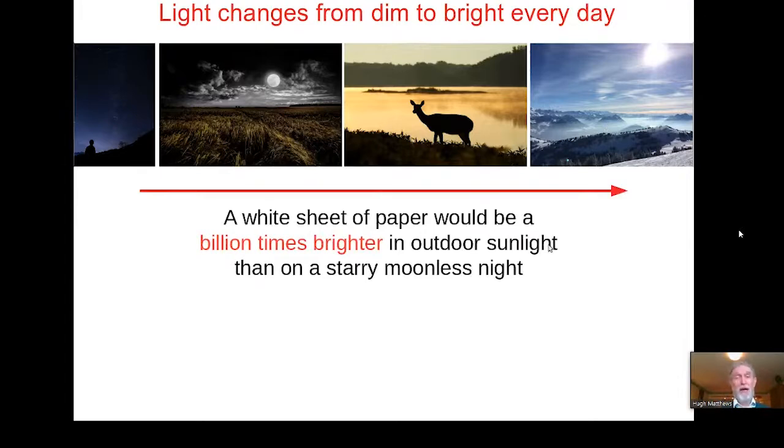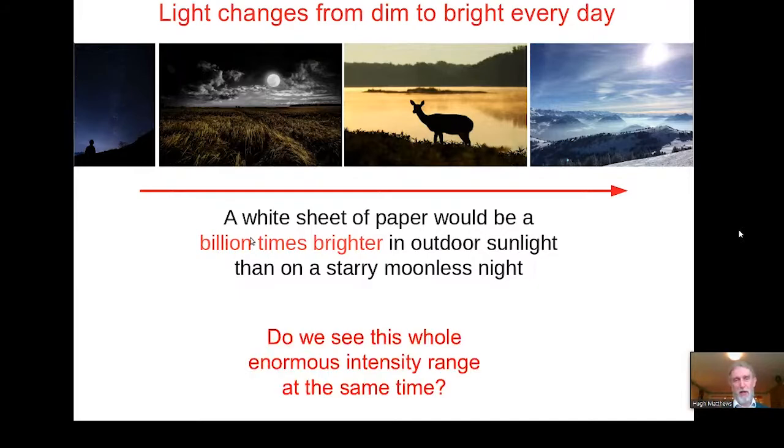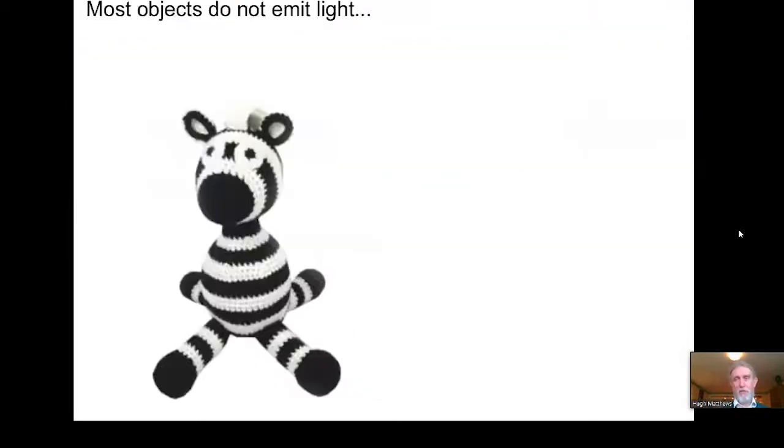And the visual system has got to cope with this truly enormous range of intensity and it really is enormous. A white sheet of paper would be about a billion times brighter in outdoor sunlight than on a starry moonless night. But do we actually see this enormous intensity range at one and the same time? Does the visual system really have to cope with this billion fold or more range at any given moment? And the simple answer to that question is no, it does not.